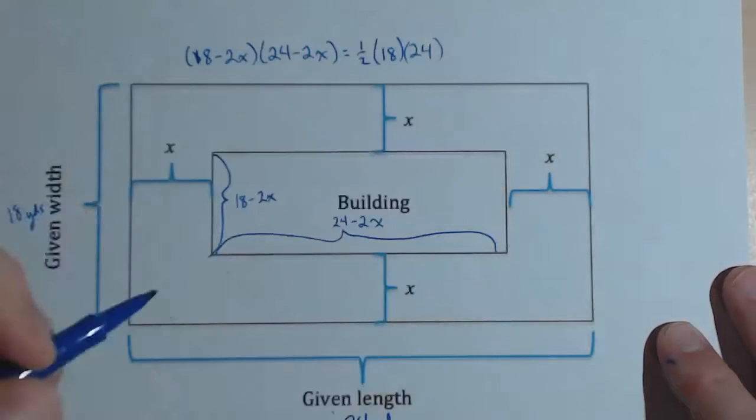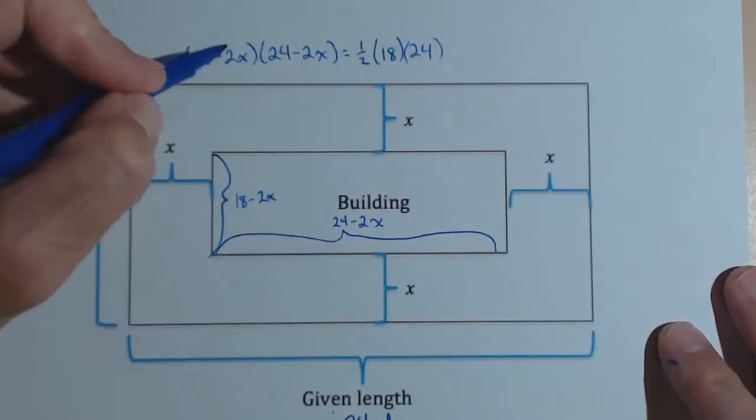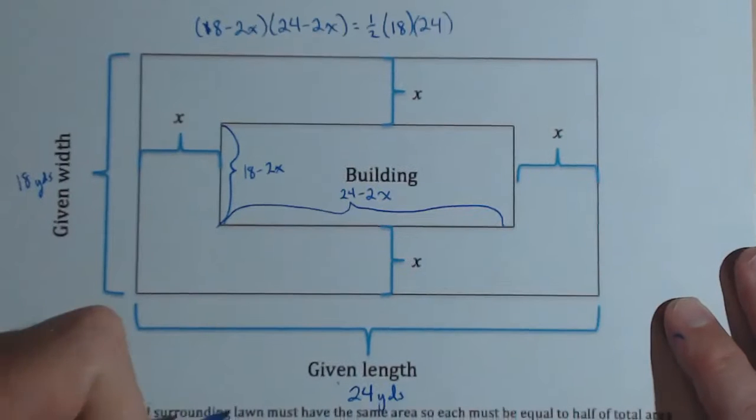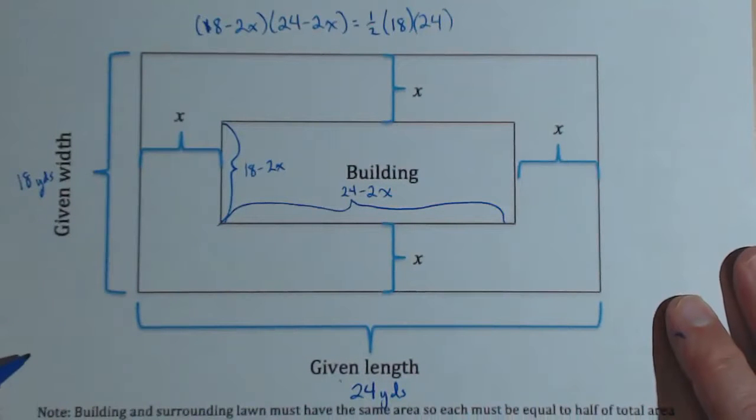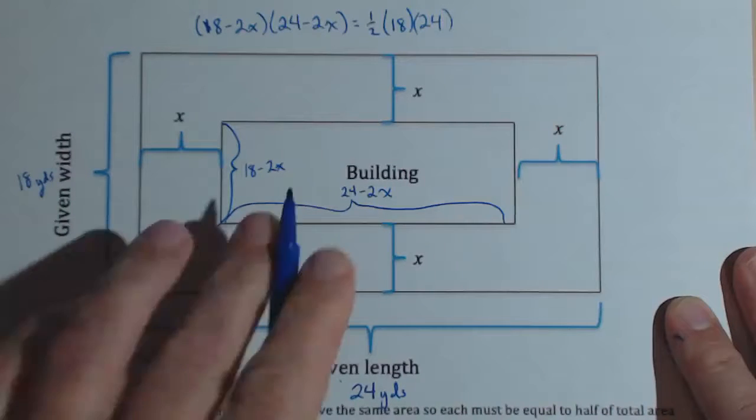And so on the left-hand side, we are going to have 432 minus, let's just go right to 84X, plus 4X squared. That comes from foiling out that left-hand side. And the right-hand side gives us 216.